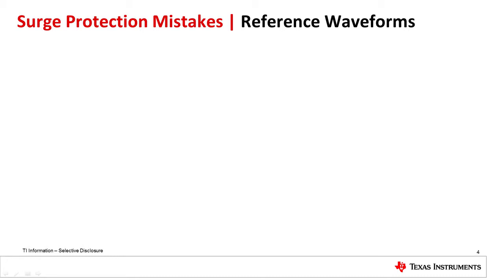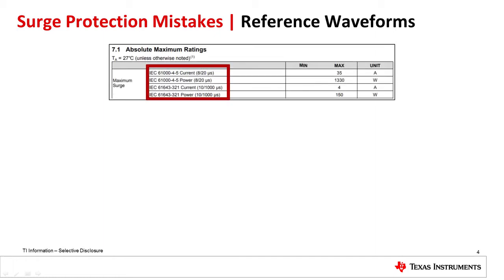The second common mistake is to confuse reference waveforms when considering TVS peak pulse current and clamping voltage. As discussed in the previous video, TVS diodes always define peak pulse current and clamping voltage in reference to a specific waveform. But unfortunately, TVS diodes are not always specified in reference to the IEC 61000-4-5 standard waveform.